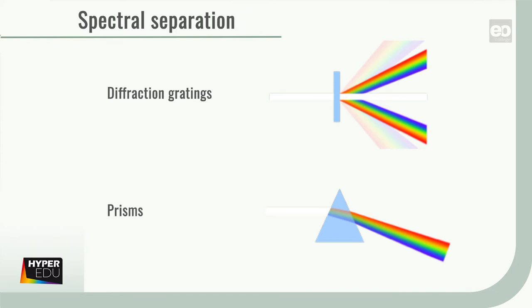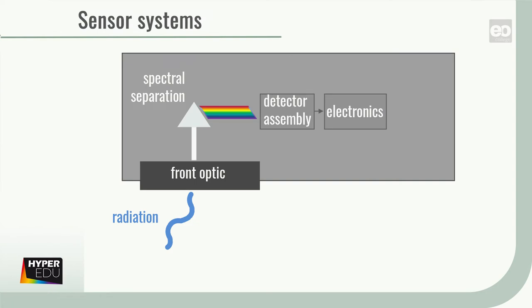Other spectrometer types are narrowband adaptive filters or interferometers. After spectral separation, a detector assembly converts the integrated irradiance of each pixel into an electronic signal to be amplified and processed by the sensor electronics.